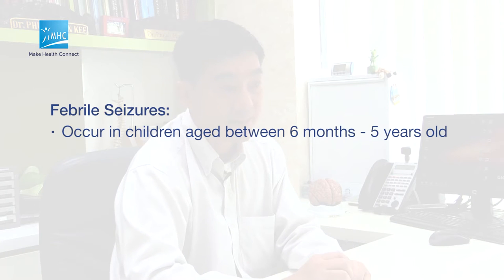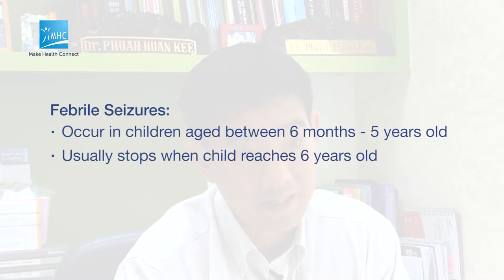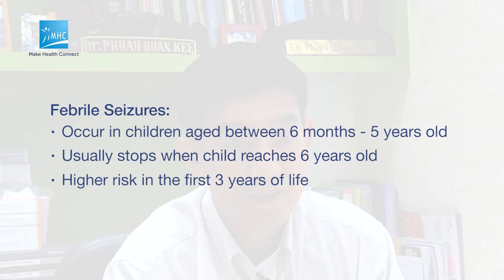Febrile seizures are a very common childhood disorder. They affect about 2-5% of children between the ages of 6 months up to 5 years of age. Most of them, by the time they reach 6 years of age, usually outgrow febrile seizures. Epidemiological studies show higher risk in the first 3 years of life. Beyond 3 years, it's still possible to have a febrile seizure but the risk drops substantially.